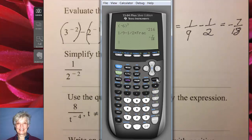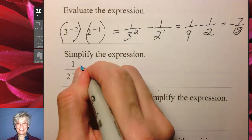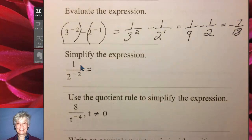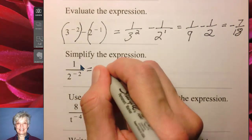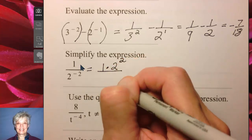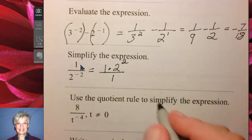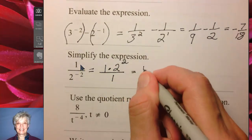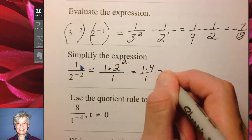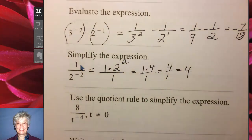Here we have 1 over 2 to the negative 2 power. What this is, is 1 times 2 to the positive 2 power, and a 1 takes the place of the term when it moves. That's going to be 1 times 4 over 1, which will be 4 over 1, which is 4.